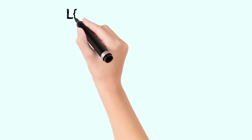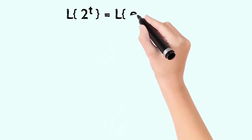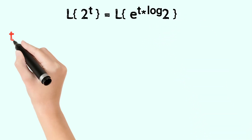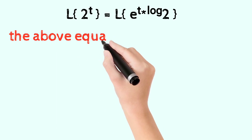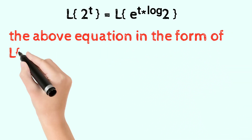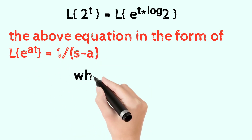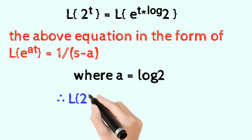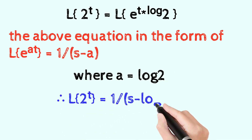Laplace transform of 2 to the power of t equals Laplace transform of a to the power of t·log 2. Writing the above equation in the form a to the power of a·t equals 1 by s minus a, where a equals log 2. Therefore, Laplace transform of 2 to the power of t equals 1 by s minus log 2.